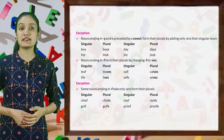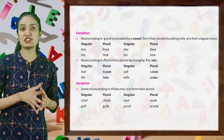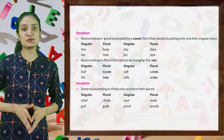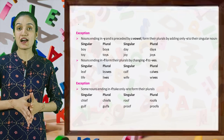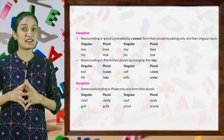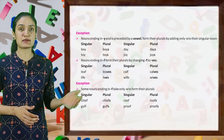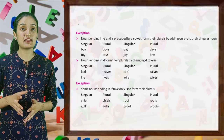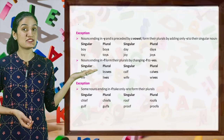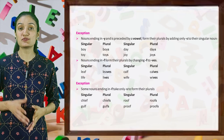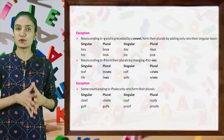Nouns ending in F form their plural by changing F to VES: leaf → leaves, calf → calves, life → lives, wife → wives. Here are some exceptions — some nouns ending in F take only S to form their plural: chief → chiefs, roof → roofs, gulf → gulfs, proof → proofs.